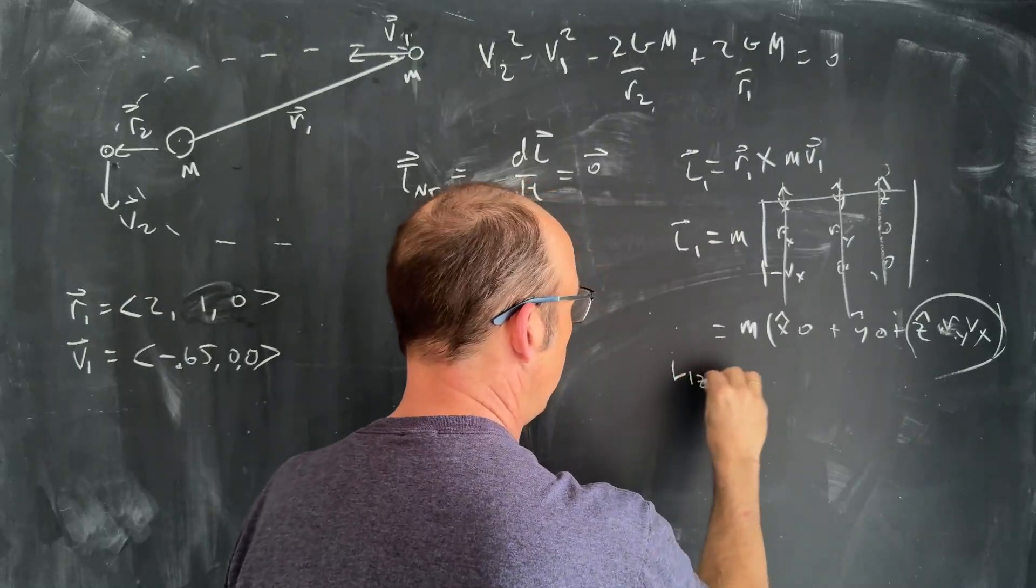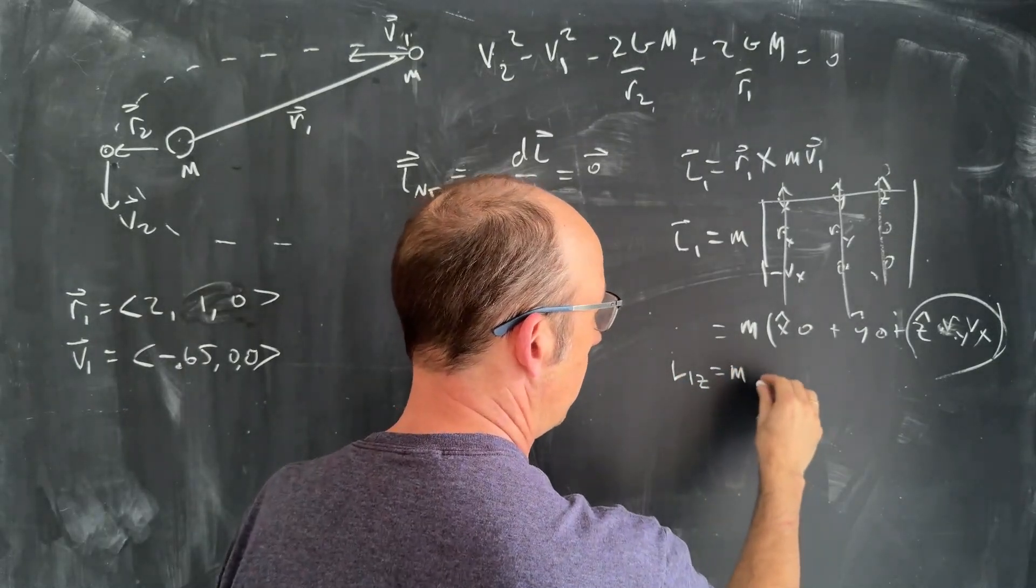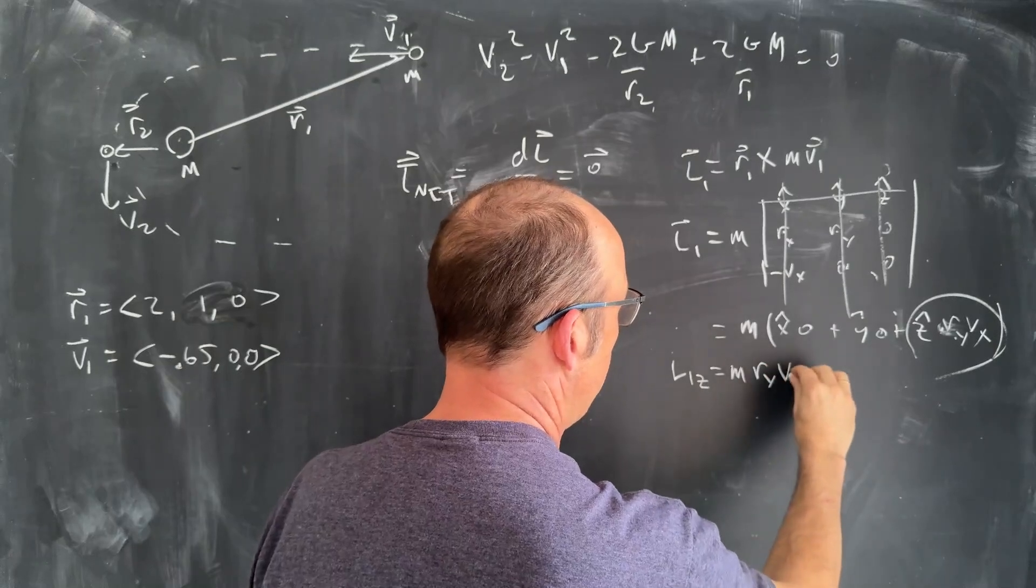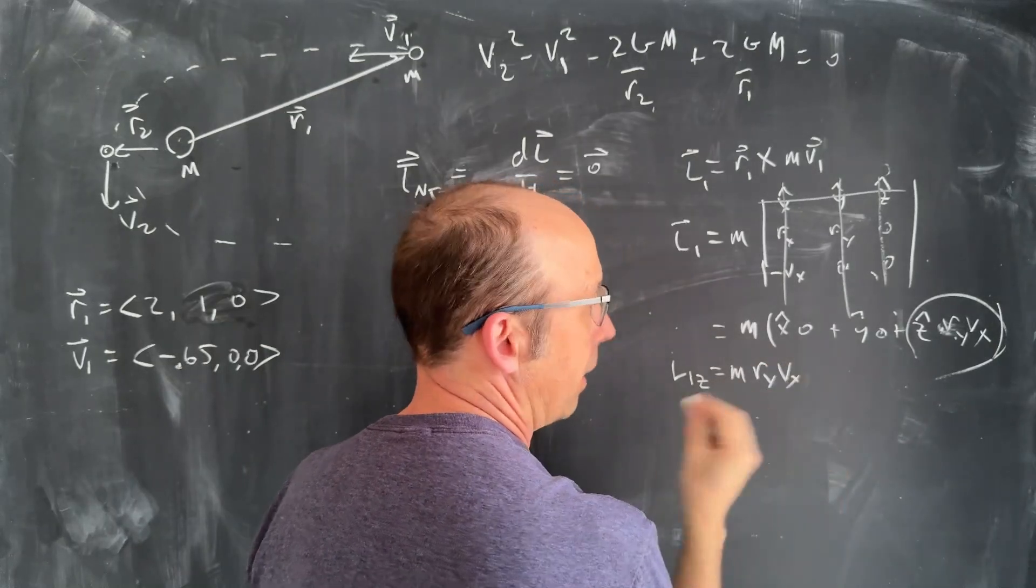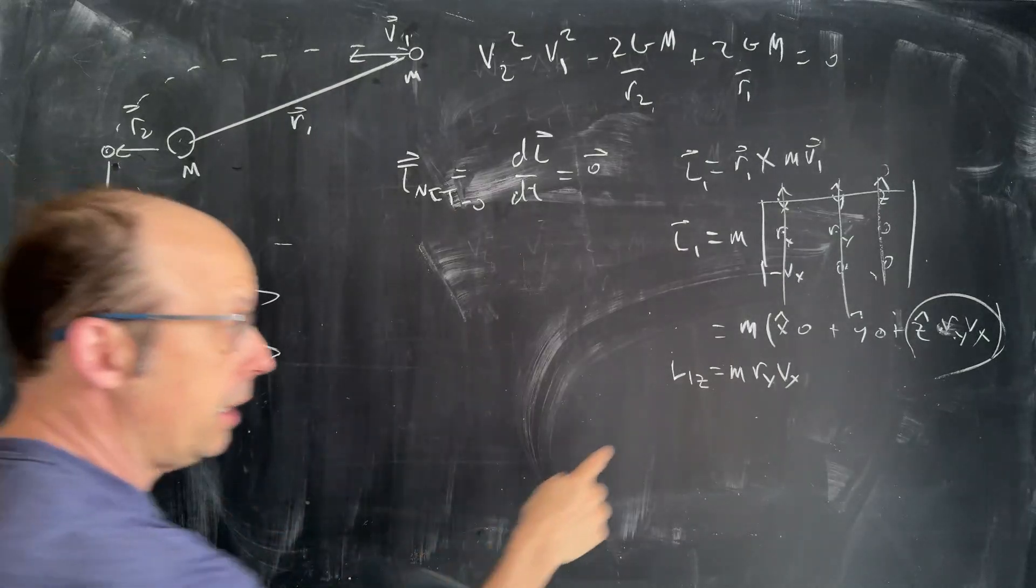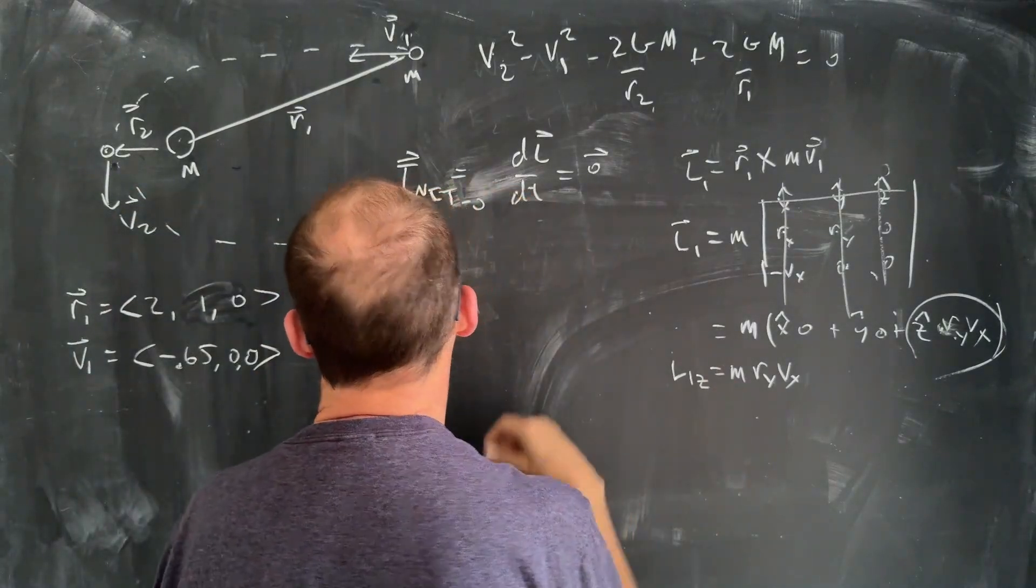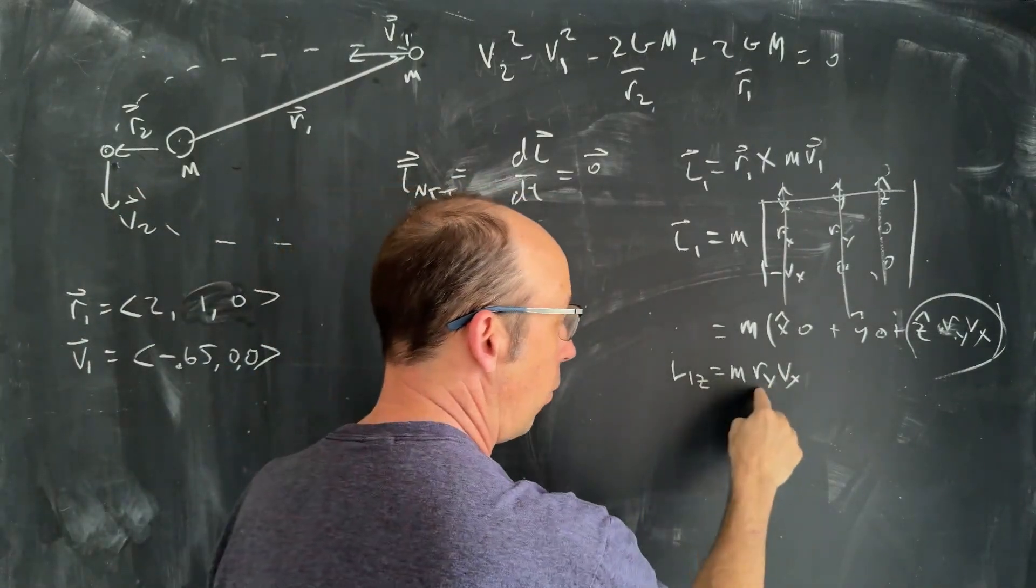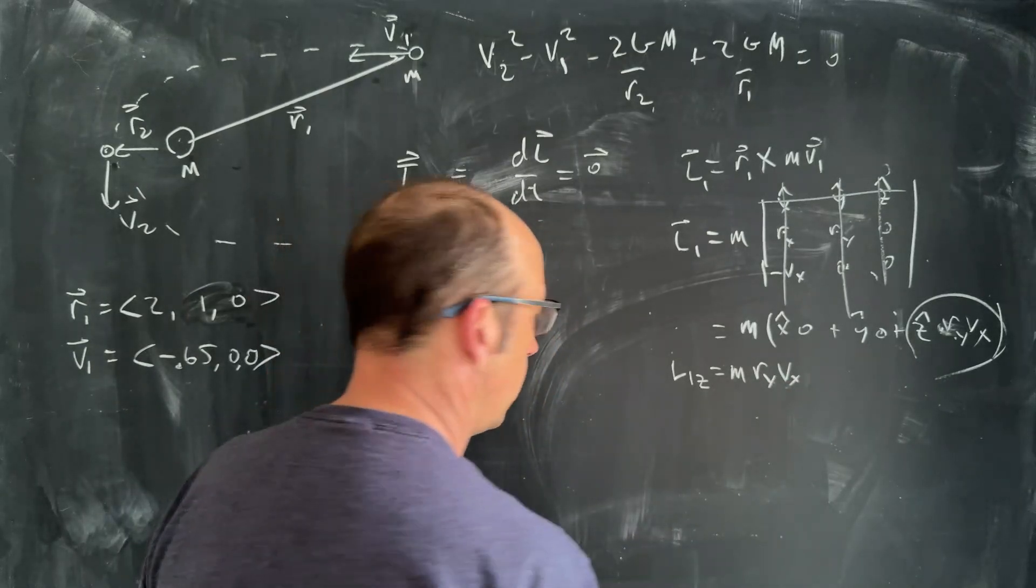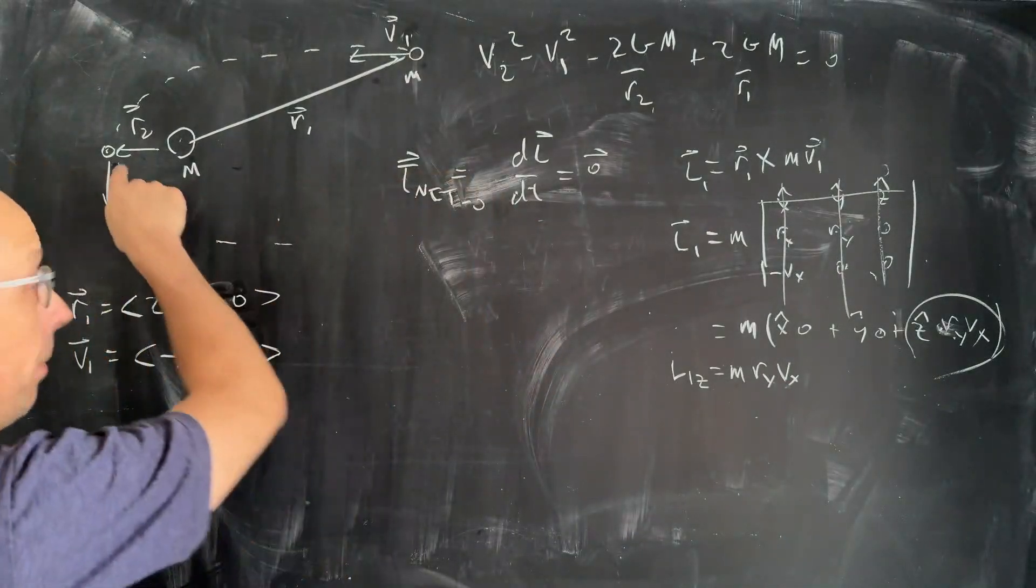So L1 is in the z direction. So L1z is going to be m r_y v_x. And I've already included that as a positive number. I put the negative sign in there. But I know m, I don't know m. Let's say m is one. And I know r_y and I know v_x. So just a constant.